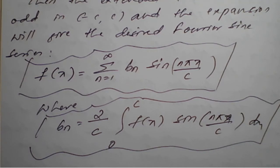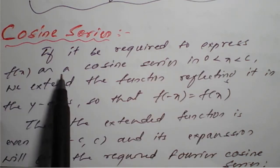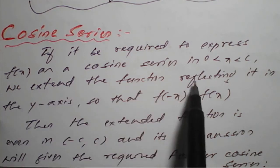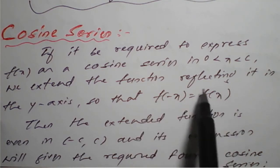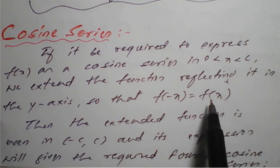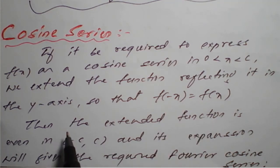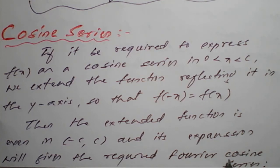Now we will see the next one — cosine series. If it is required to express f(x) as a cosine series in x greater than 0, less than c, we extend the function reflecting it in the y-axis, so that f(-x) equals f(x). This is the condition for an even function. After replacing x by minus x, if we get f(x) again, we call it an even function. If it is even, bₙ is 0; only we need to find a₀ and aₙ. Then the extended function is even in (-c, +c) and its expansion will give the required Fourier cosine series.